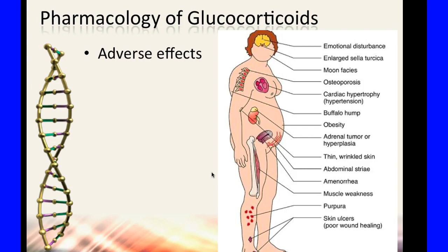As for adverse effects: if you're taking steroids for too long, you risk getting Cushing syndrome, which is an overproduction of cortisol. Symptoms include emotional disturbance, weight gain, the buffalo hump, thin wrinkled skin, stopped periods, muscle weakness, purpura, skin ulcers, and hypertension. You'll also see a moon face — the face becomes round and puffy — and stretch marks from rapid weight gain.